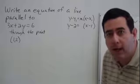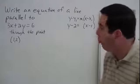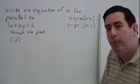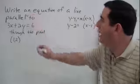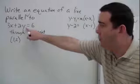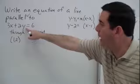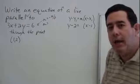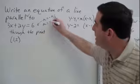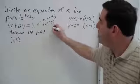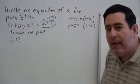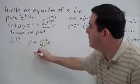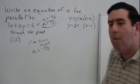Now let's look at writing equations for parallel and perpendicular lines. For this first one, we've been asked to write an equation of a line parallel to 3x plus 2y equals 6, passing through the point (1, 2). The key word is 'parallel' — that tells me our new line needs the same slope as the given line. Since it's in standard form, let's use negative a over b: opposite of the coefficient of x is negative 3, divided by the coefficient of y, which is 2. So the given line has a slope of negative 3 halves, and our parallel line will use the same slope.